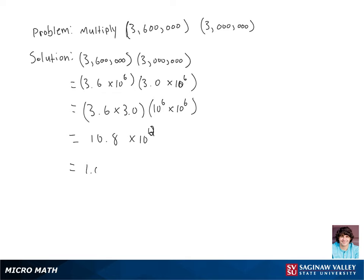So we get 10.8 times 10 to the twelfth. Now we're going to rewrite this number in scientific notation. There's one number to the left of the decimal, so we get 1.08 times 10 to the first power times 10 to the twelfth power. And then our final answer is 1.08 times 10 to the thirteenth power.